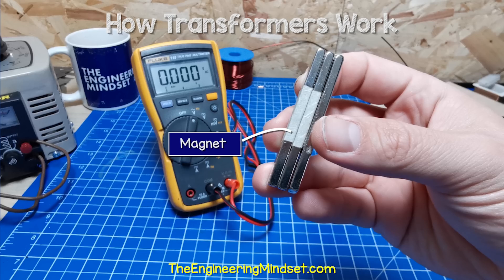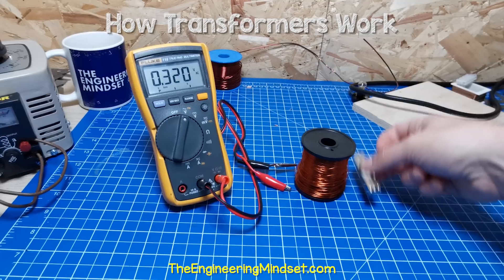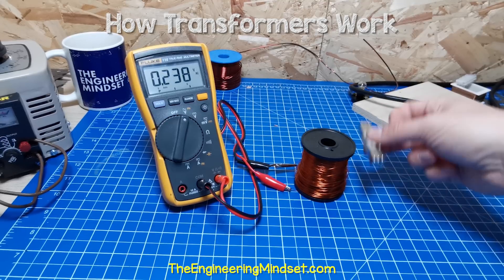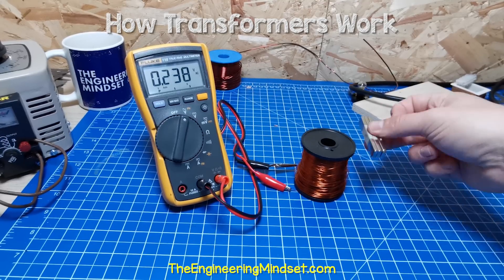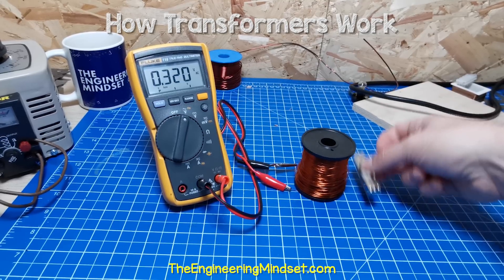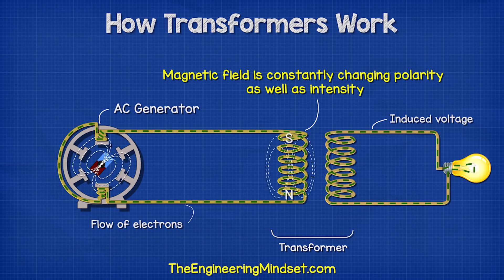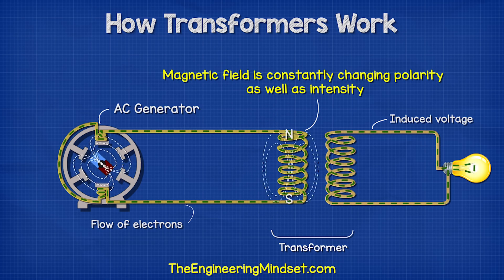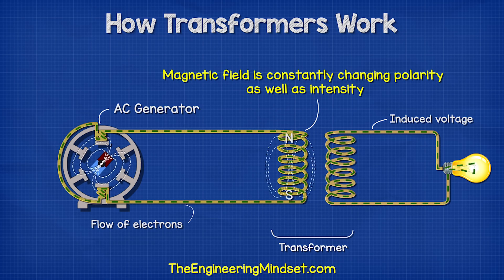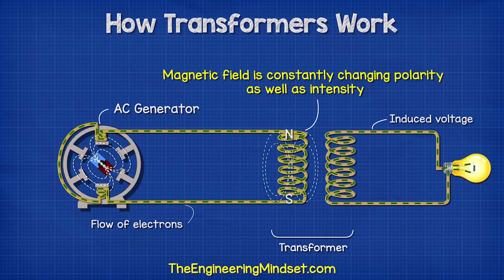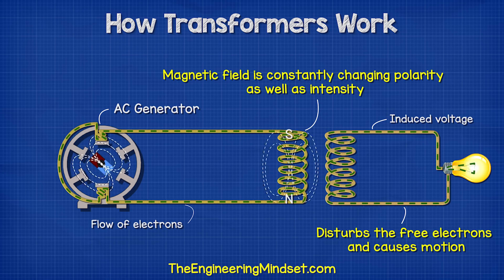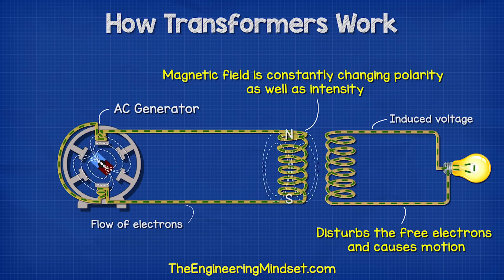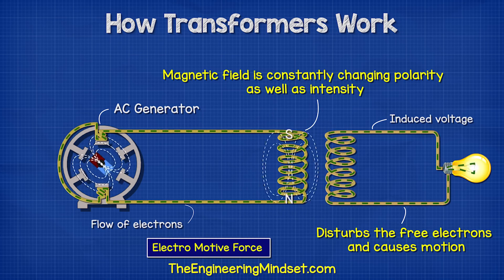The same thing happens if we move a magnet past a coil of wire — the magnet will induce a voltage into the coil. The key component here is that the magnetic field is constantly changing polarity as well as intensity. This disturbs the free electrons and causes them to move, and we call this electromotive force.